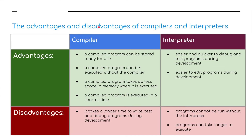Regarding advantages and disadvantages of compilers versus interpreters: a compiled program can be stored ready for use, executed without the compiler, takes up less space in memory, and is executed in a shorter amount of time. The disadvantage is it takes a longer time to write, test, and debug programs during development. An interpreter is much easier and quicker to debug and test during development, and it is easier to edit programs at the development stage. But programs cannot be run without the interpreter, and programs can take longer to execute.